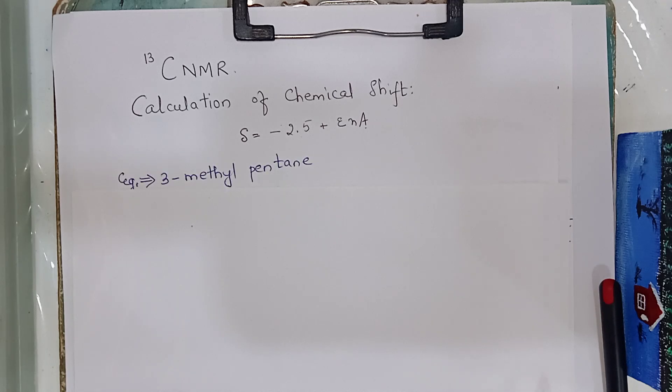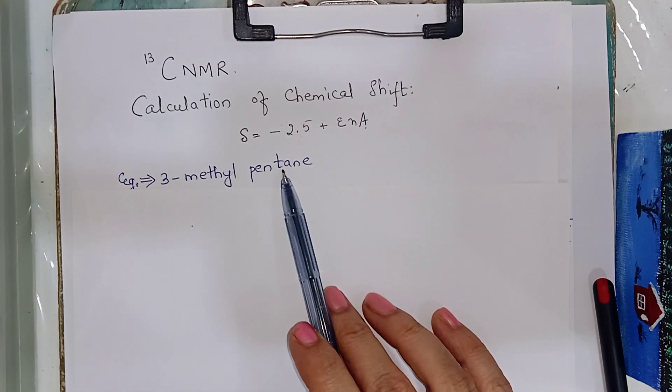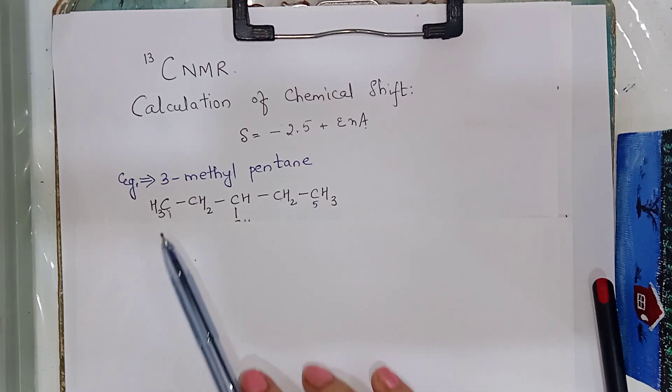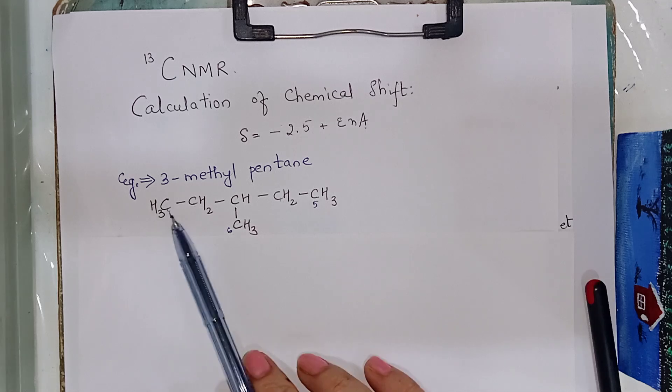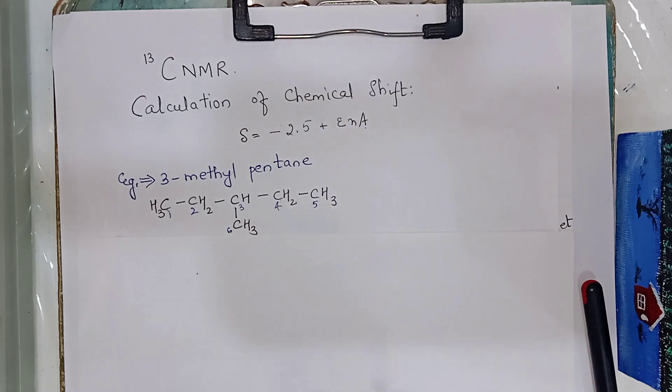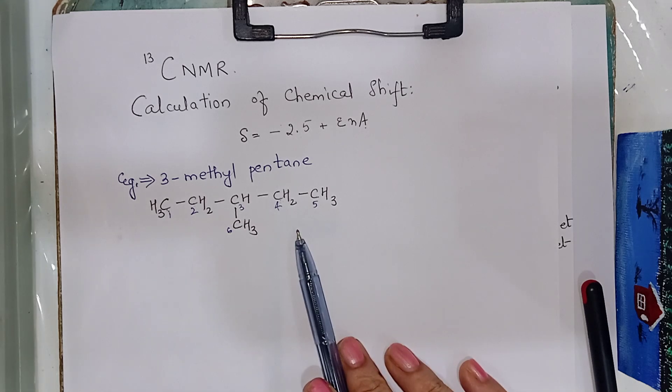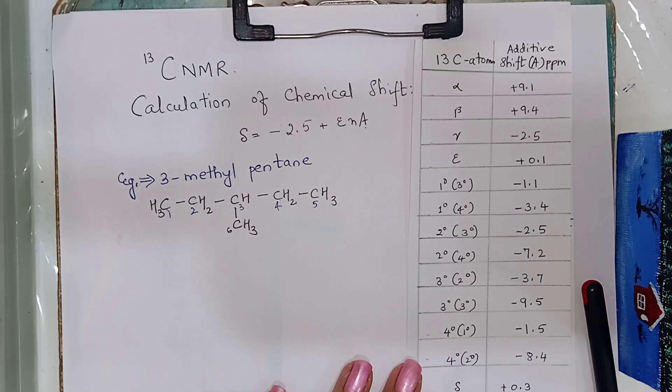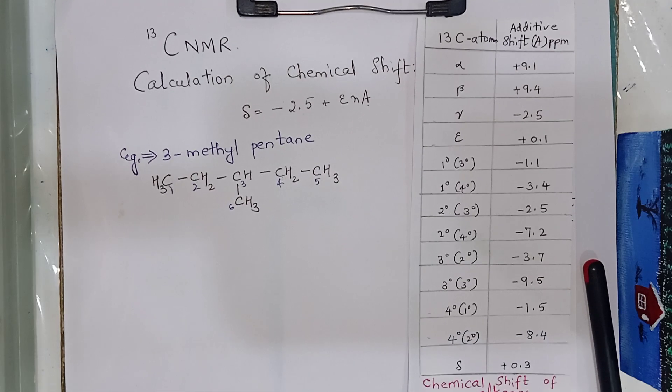The first one here is 3-methyl pentane. Let us write it down. 3-methyl pentane here. 1, 2, 3, 4, 5 and 6. For alkanes, these are some of the chemical shifts of alkanes. We can use them while doing our calculations.